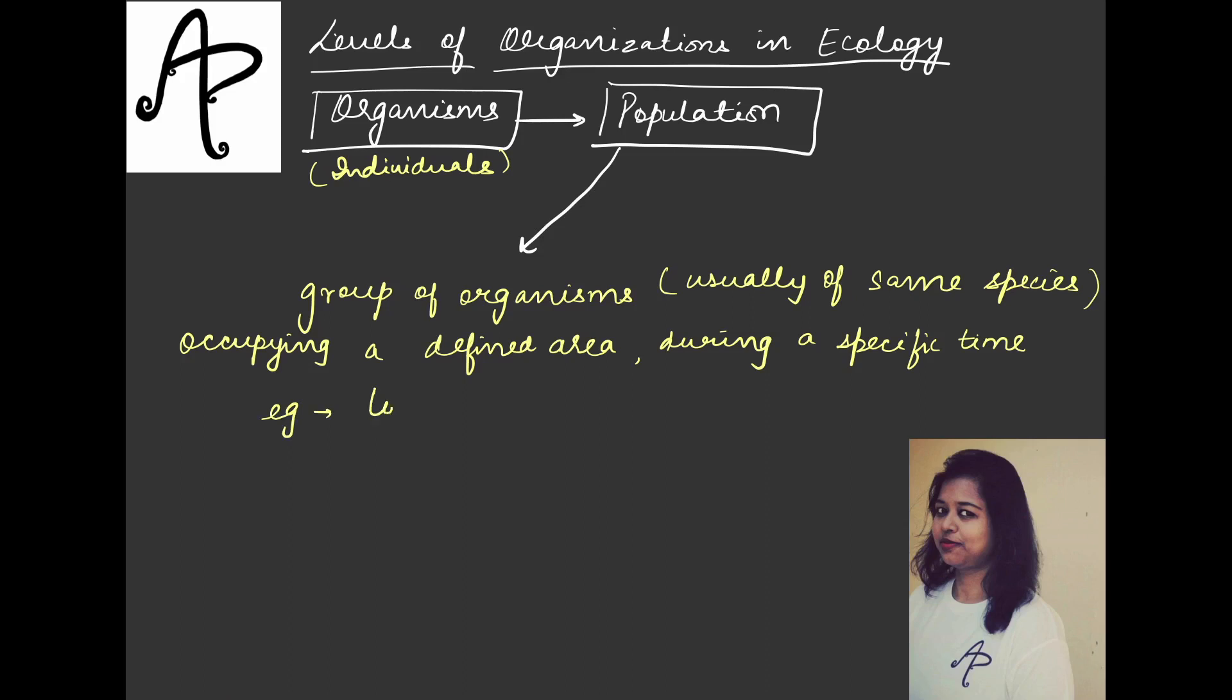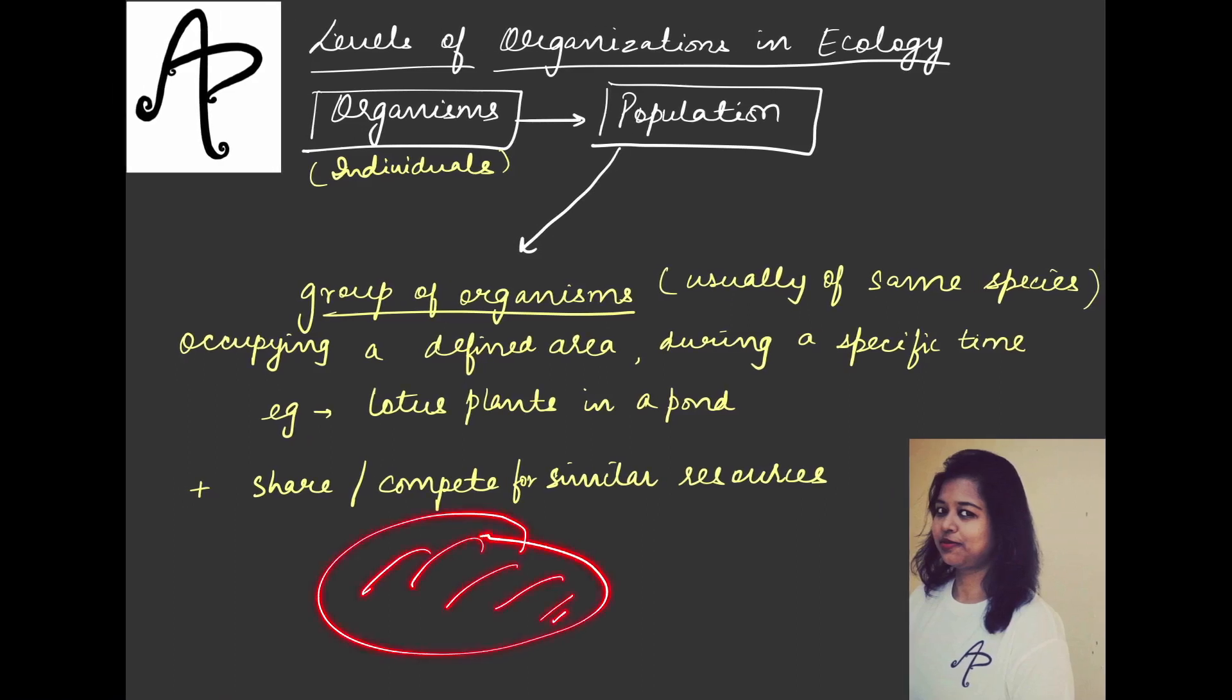For example, you can say, let's say there is a pond and there are lotus plants in that. So lotus plants in a pond could be considered as an example of a population. Now it might be possible that the organisms which will be living in a particular area, they will either share or either compete for similar resources. Either all the organisms here will share those resources or it might be possible that they are competing. So if the resources are limited and the organisms are more, they might also compete for the resources.